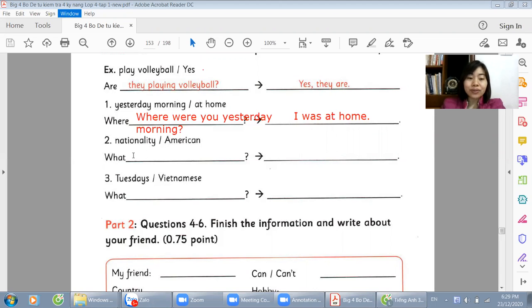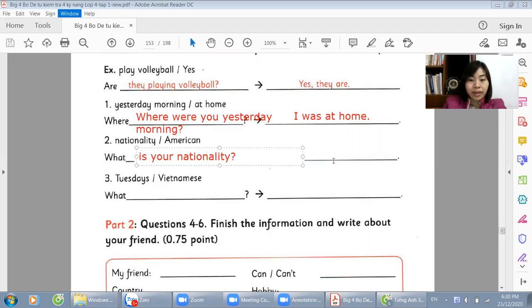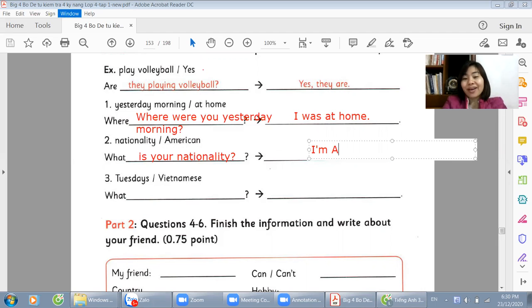Yesterday morning. The second sentence is asking about nationality. With the word nationality. So we will ask: What is your nationality? Or what nationality are you? American. Not America, but American. I'm American.